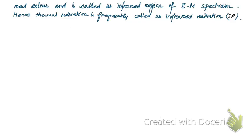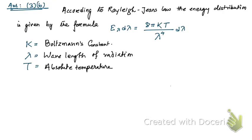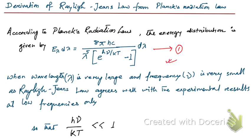Now this is the 3b answer. Let me go back to the question — here is the question for 3b. We need to write the statement of Rayleigh-Jeans law for two marks, and derive it from Planck's radiation law for three marks. Here is Rayleigh-Jeans law of energy distribution, and we're going to derive it using Planck's radiation law.